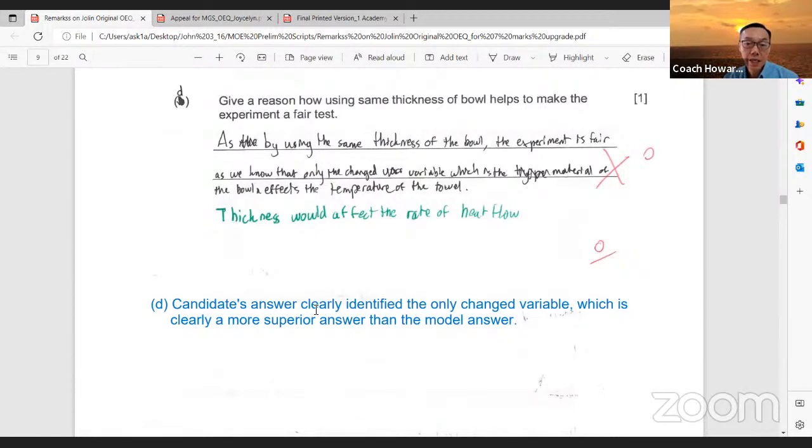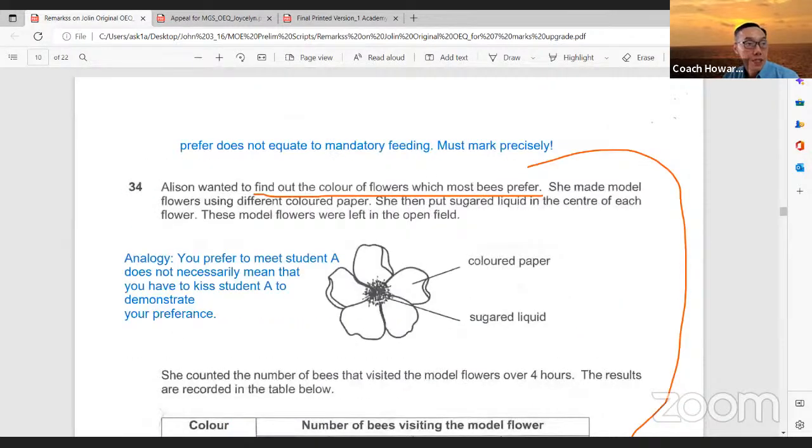It says give a reason how using same thickness of bowl helps to make the experiment a fair test. The candidate wrote as by using the same thickness of the bowl, the experiment is fair. As we know that only the change variable, she identified the change variable, which is the type, which is the material of the bowl, affects the temperature of the water.